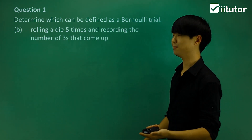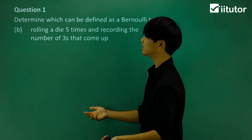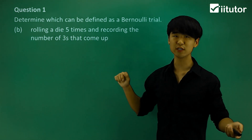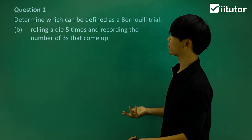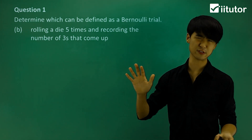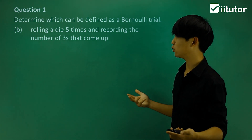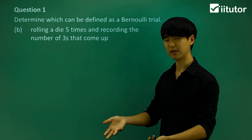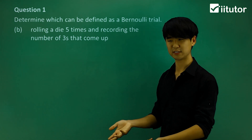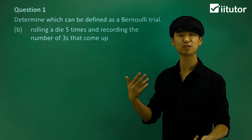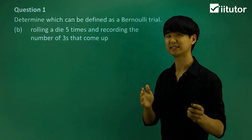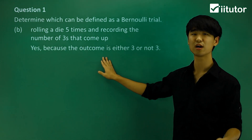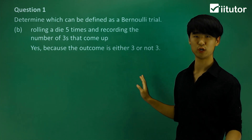Looking at part B — the event is rolling a die five times and recording the number of threes that come up. This is a slightly different situation. We're rolling a die and recording: is there a three? Yes or no. If there's a different number, then no. In this case, it does have a success and failure outcome, so yes, it is a Bernoulli trial because the outcome is either a three or not a three.